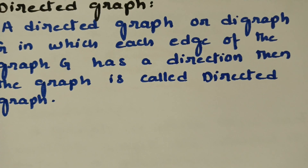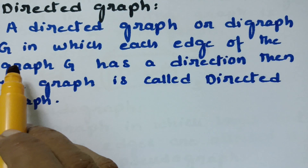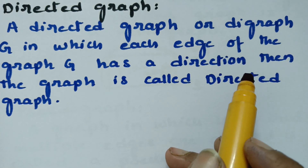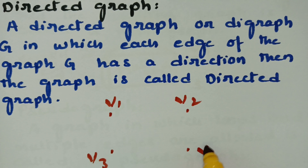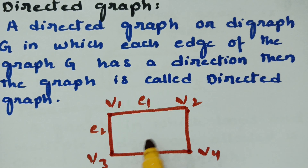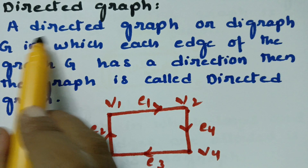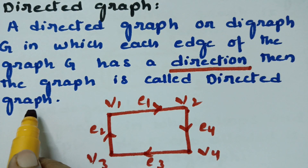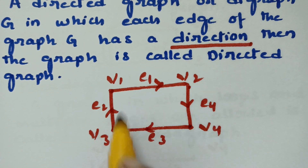A directed graph or digraph G is a graph in which each edge has a direction. For vertices V1, V2, V3, V4 with edges E1, E2, E3, E4, there is a direction assigned to each edge — for example, from V1 to V2, V2 to V4, V4 to V3, and V3 to V1. This is a directed graph.